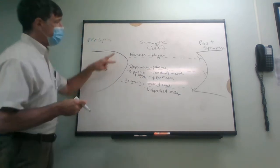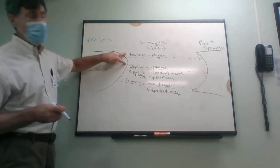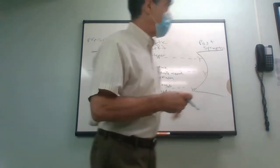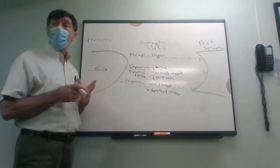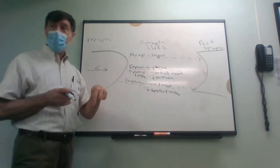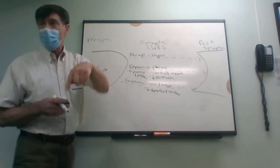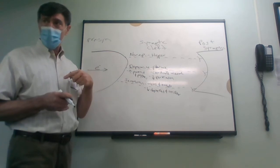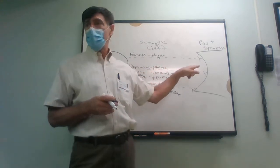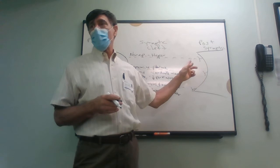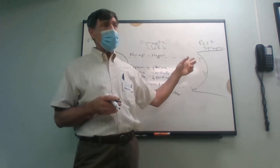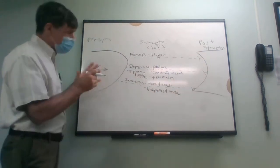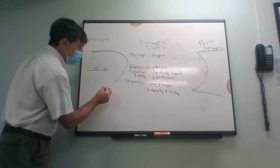Norepinephrine and dopamine are excitatory — when they hit that receptor they turn that nerve on, and all the nerves down that pathway. Serotonin goes both ways: it gets rid of depression, elevates mood, and reduces anxiety. Really, what makes a neurotransmitter excitatory or inhibitory is the receptor it hits. There are about seven different types of dopamine receptors and five or six serotonin subtype receptors.